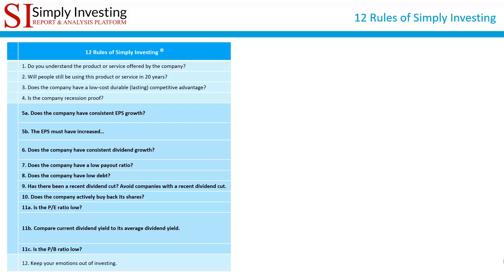The rules shown in bold — rules number five to number eleven — are quantitative, meaning there's no discrepancy here and a company will either pass or fail that rule. For example, rule number six requires that the average 20-year dividend growth must be eight percent or more. If it's less than eight percent, then a company would fail rule number six.